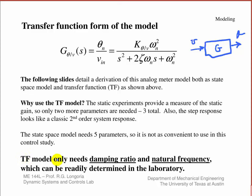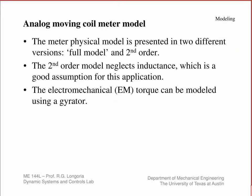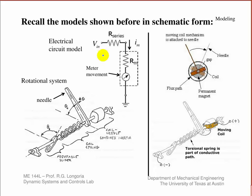In summary, the transfer function model only needs these two parameters, and that's kind of what we're shooting for in the lab. I'm going to show you the full model, and then how we can neglect the inductance in the coil of the meter, and then that becomes a nice second-order model. I also want to show you how the electromechanical torque is modeled.